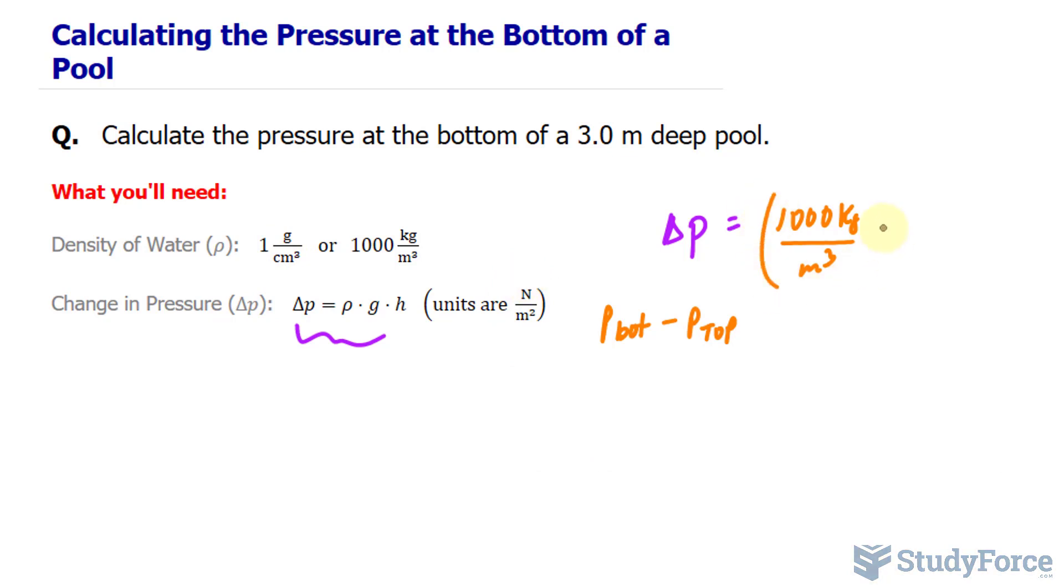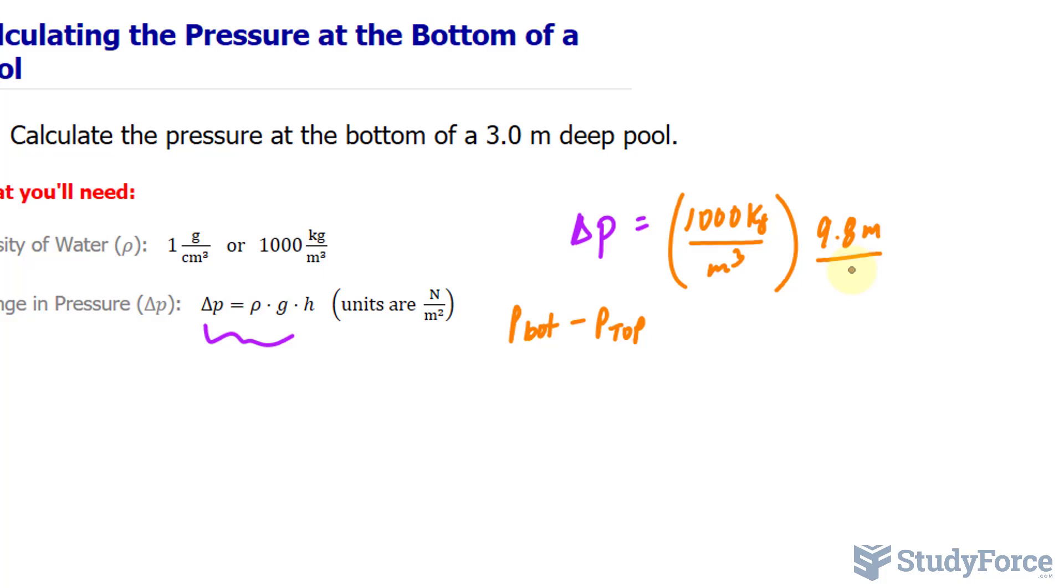So we'll take this value and multiply it to g, which represents the acceleration due to gravity. That is a constant at 9.8 meters per second squared.